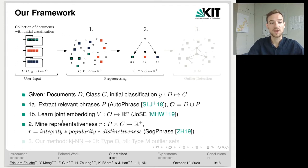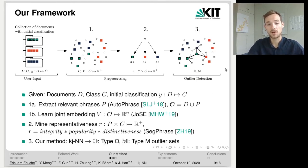In the second step, we mine the representativeness of each phrase. So the representativeness assigns a score for each phrase and each class, which is defined as the product of the integrity, the popularity, and the distinctiveness of the phrase. Please see this reference if you want more detail about this score. Once we have done that, we can apply our method, the kj nearest neighbor. And the outcome of this method is two lists, a list O of type O outliers and a list M of type M outliers.